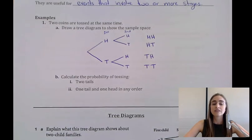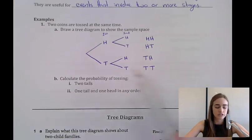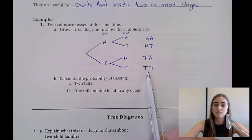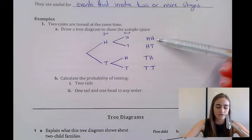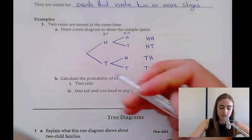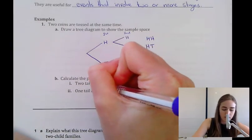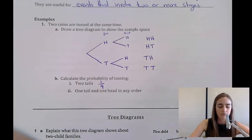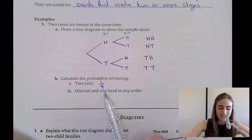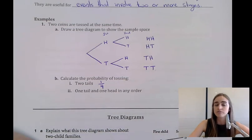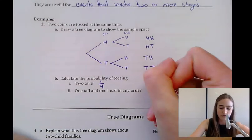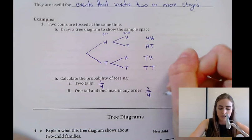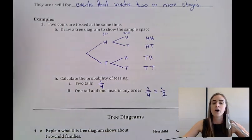Part B of our question asks us to calculate the probability of tossing two tails. So there's one outcome that's favorable, which has two tails, out of a total of four possible outcomes. So the probability of tossing two tails would be one out of four. The probability of tossing one tail and one head in any order, so we don't mind if it's heads tails or tails heads, would be two out of four, which simplifies to a half.